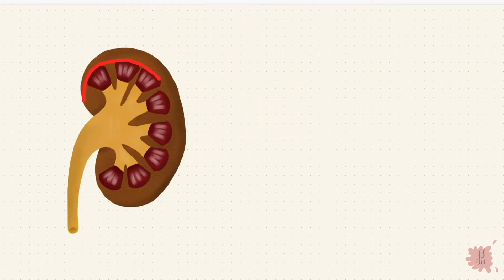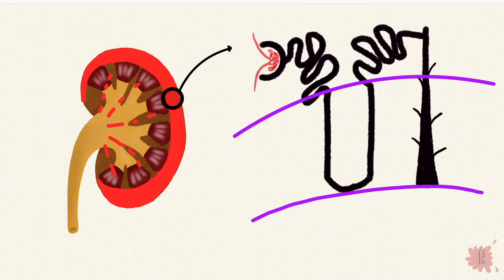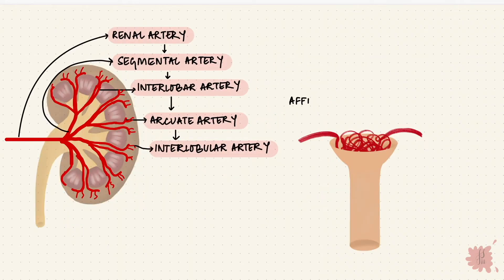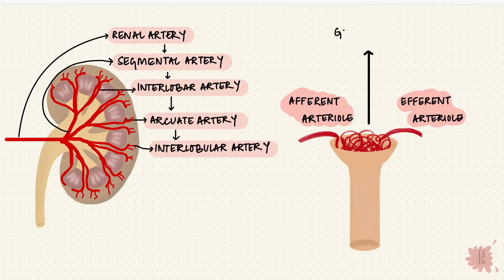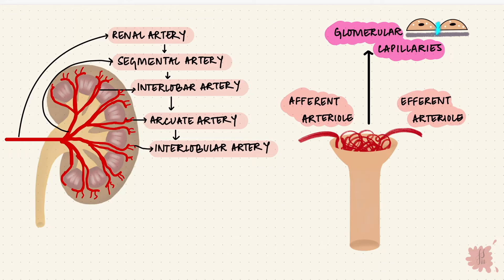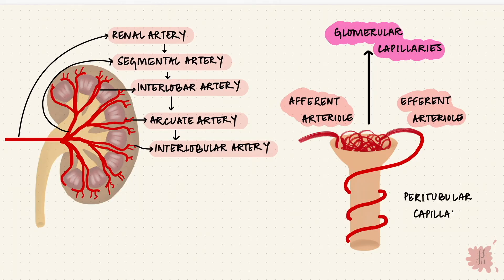The kidneys have an outer cortex and an inner medulla. The cortex is better perfused than the medulla. The glomeruli of the nephrons are in the cortex. The interlobular arteries form the afferent arterioles. The afferent arteriole enters the glomerulus, and what leaves the glomerulus is the efferent arteriole. In between, we have the glomerular capillaries — a bunch of fenestrated capillaries that filter incoming blood. The efferent arteriole then forms peritubular capillaries around the rest of the nephron.